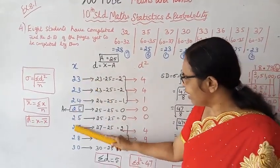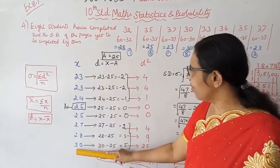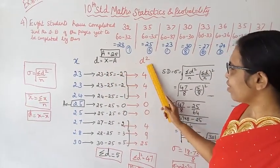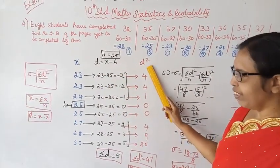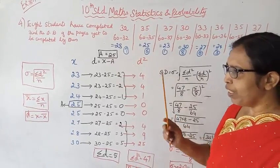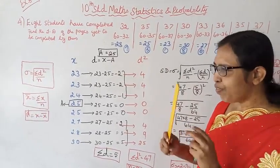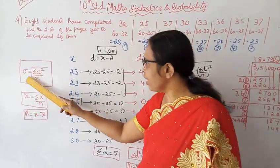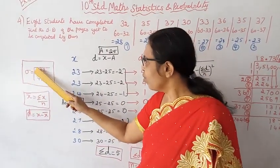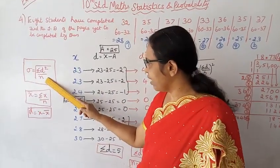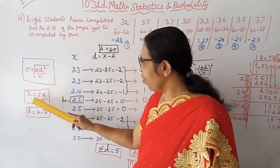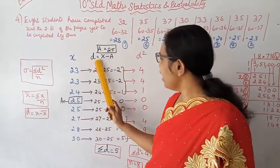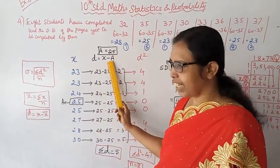We set up a table. Let d equal to x minus a, and d squared. The formula is sigma equal to root of sigma d squared by n minus sigma d by n, the whole square. Also x bar equal to sigma x by n, and d equal to x minus x bar.